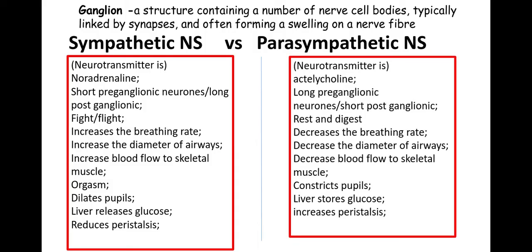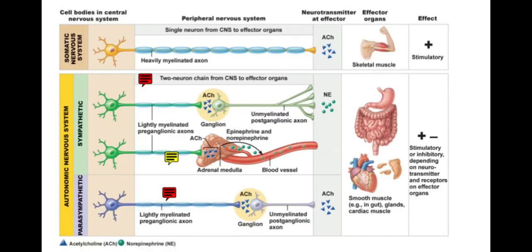The parasympathetic nervous system is almost the opposite. It involves the neurotransmitter acetylcholine, and has long preganglionic and short postganglionic neurons. It's involved in rest and digest. It decreases the breathing rate, decreases the diameter of the airways, decreases the blood flow to skeletal muscles, constricts pupils, causes the liver to store glucose as glycogen, and also increases peristalsis.